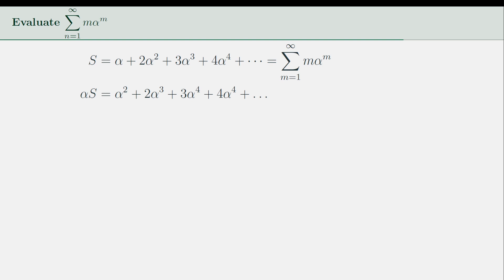Next, we subtract the result from the original expression. So that's S minus αS equals the quantity α plus 2α² and so on minus α² plus 2α³.